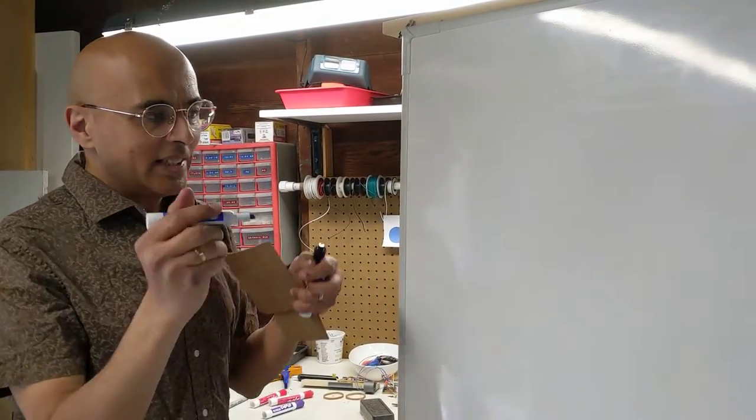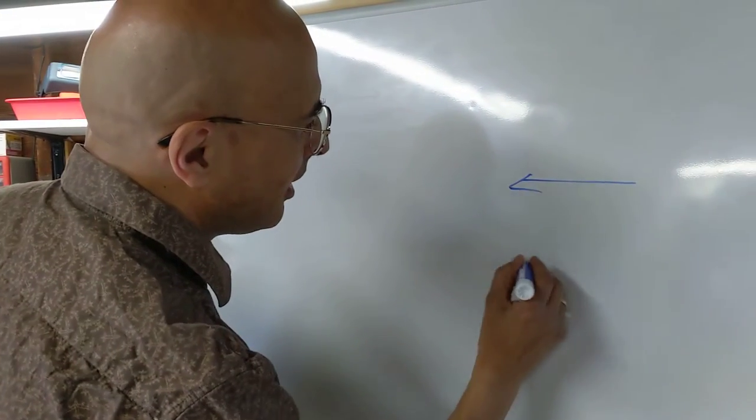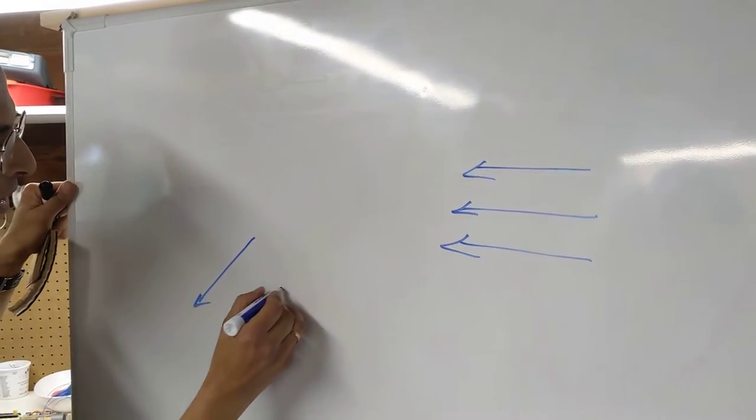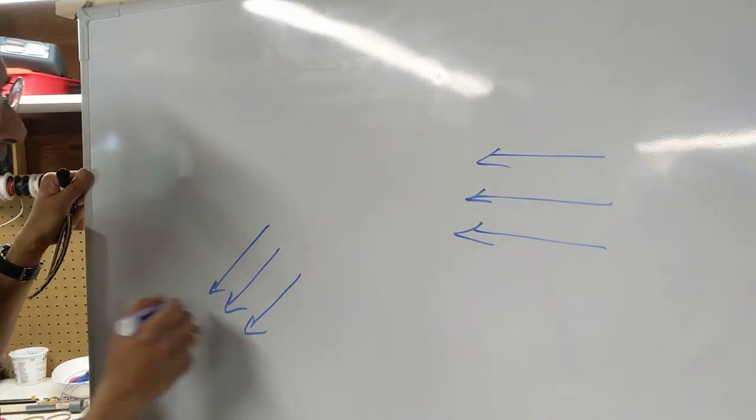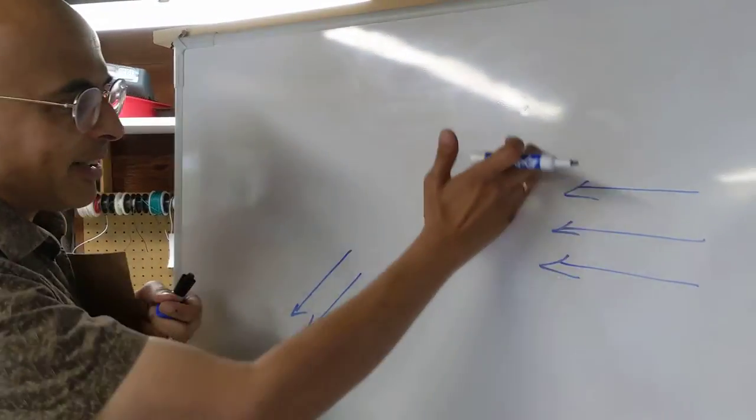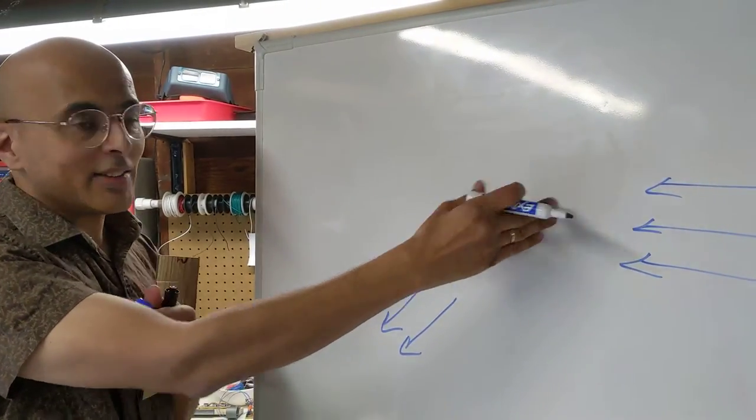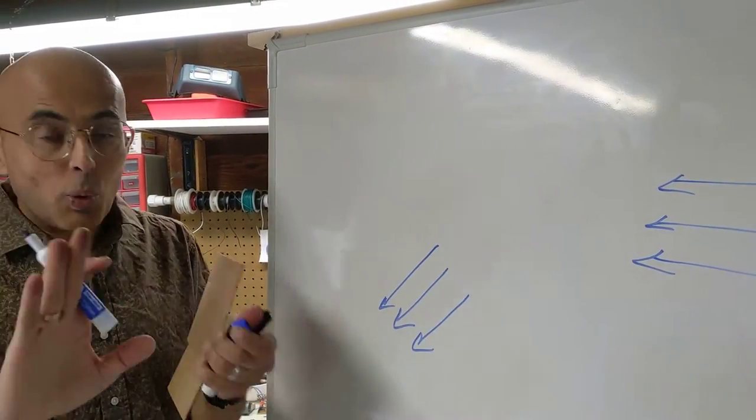So what I really need to build is something that takes an airflow coming in this way and produces an airflow coming out that way. Okay. And I don't care what's inside of here. This is just whatever I need to do. And anything that produces this effect will work.